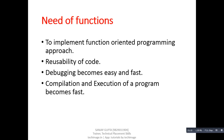Now, the need of functions. There are various needs of functions in C programming, the first of which is to implement function oriented programming approach. C is a function oriented programming language, which means we have to implement all the problems in individual functions. Right now you are implementing all the instructions in the main function. If main function has more than one problem, we can divide or split that into more than one functions. Dividing a program into various functions is known as function oriented programming approach.